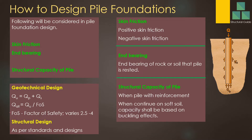Geotechnical capacity can be assessed using equations where end bearing and skin friction are added together to calculate the pile bearing capacity. You can find the ultimate capacity or the service capacity. If you find the ultimate capacity, you divide it by a factor of safety depending on your standard — the factor of safety may range from 2.5 to 4. Individual factors of safety may be applied to each component to evaluate the allowable geotechnical capacity.